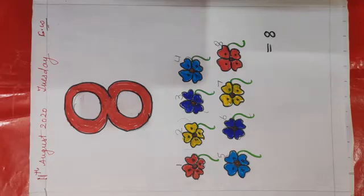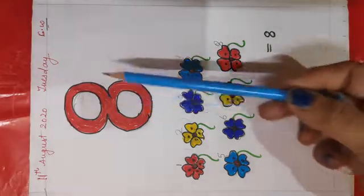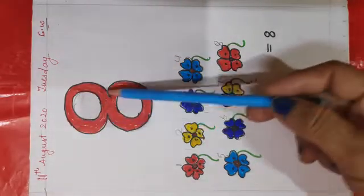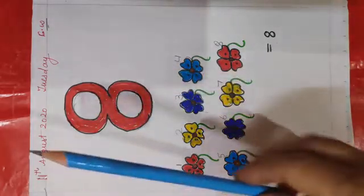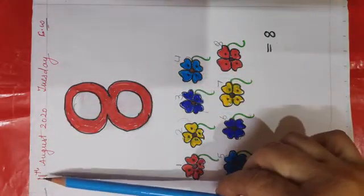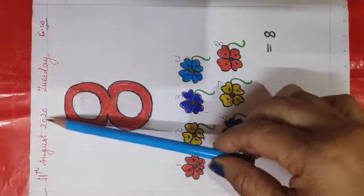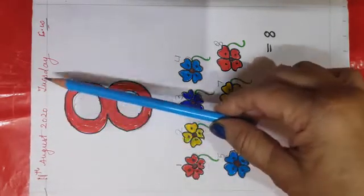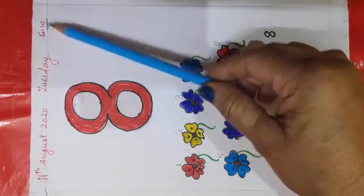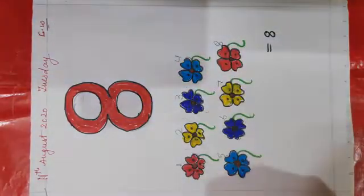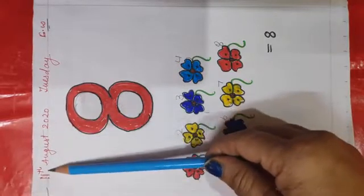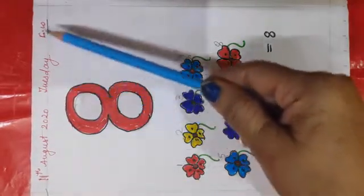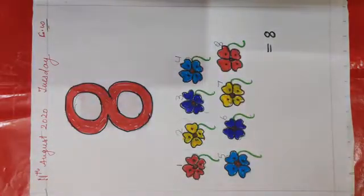So children, today I will teach you how to write 8. See, I have written this is 8. What is this? This is 8 and today is 11th August 2020 and day is Tuesday and this is your classwork. Your mama will write this date and day and classwork.